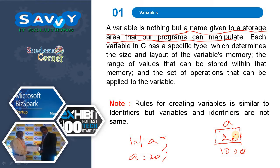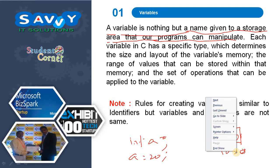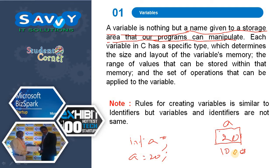Allocating a name to the memory address is called a variable. Each variable in C has a specific type which determines the size and layout of the variable's memory, the range of values that can be stored within that memory, and the set of operations that can be applied to the variable. Note: rules for creating variables are similar to identifiers, but variables and identifiers are not the same.